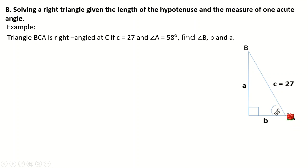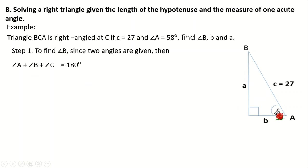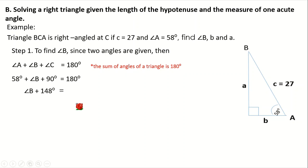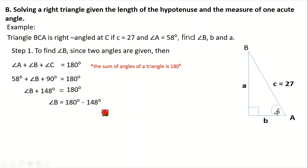Another example of solving a right triangle — this time the hypotenuse and one acute angle are given. Here we have only one side given, but we have 58 degrees for angle A and 90 degrees for angle C. First, let's find angle B. Since we have two angles, we can subtract them from 180 degrees. So 58 plus 90 equals 148 degrees. Applying the subtraction property: angle B equals 180 minus 148 degrees, which gives us 32 degrees. Therefore, angle B is 32 degrees.